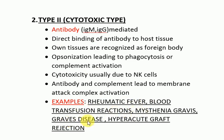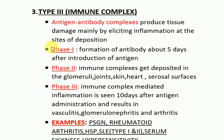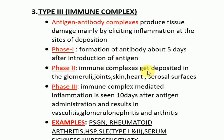Type 3 hypersensitivity reactions are immune complex-mediated. Antigen-antibody complexes are produced and deposited at different sites of the body causing inflammation. Phase one is the formation of antibody about five days after antigen introduction. In phase two, immune complexes get deposited in the glomeruli, joints, skin, heart, and serosal surfaces.